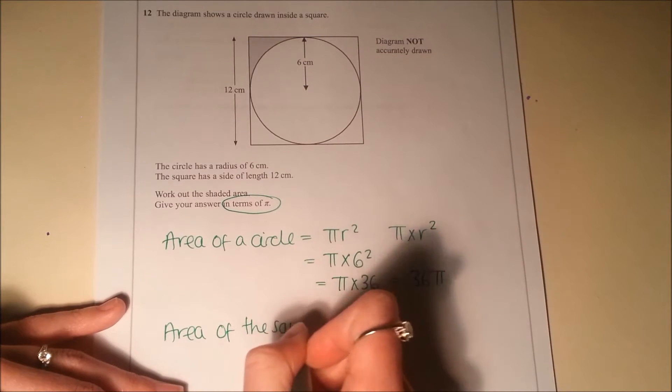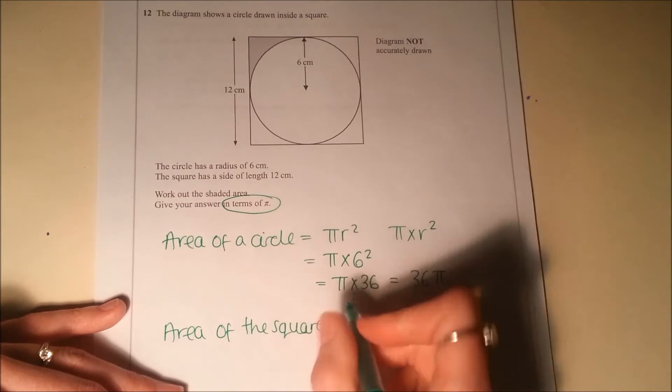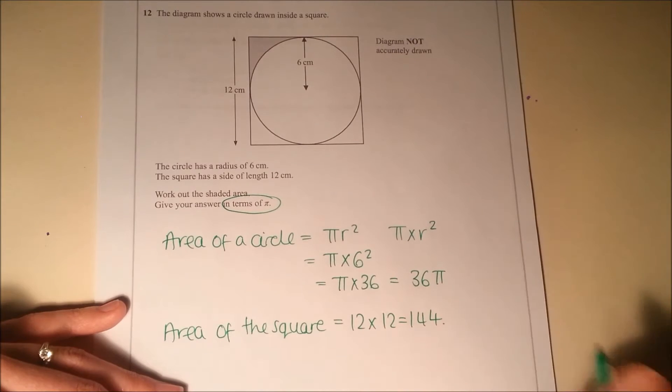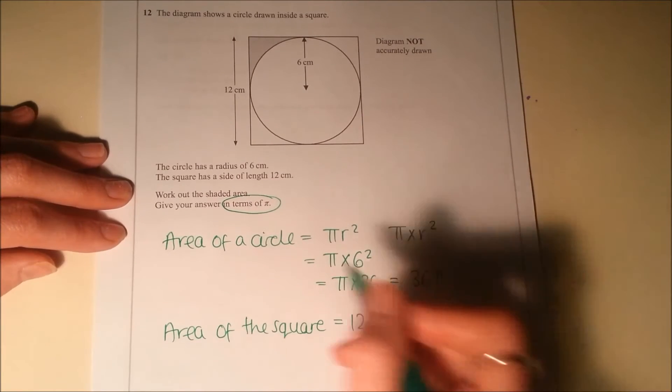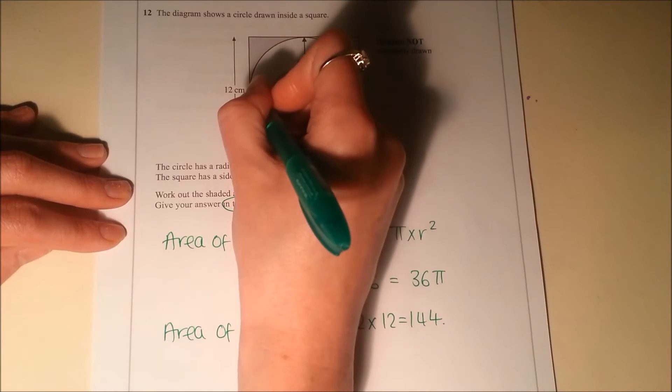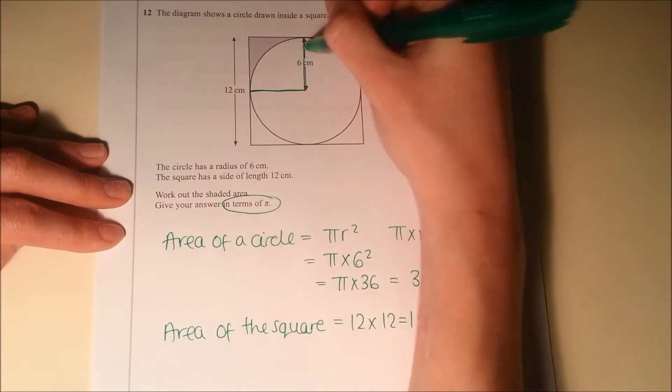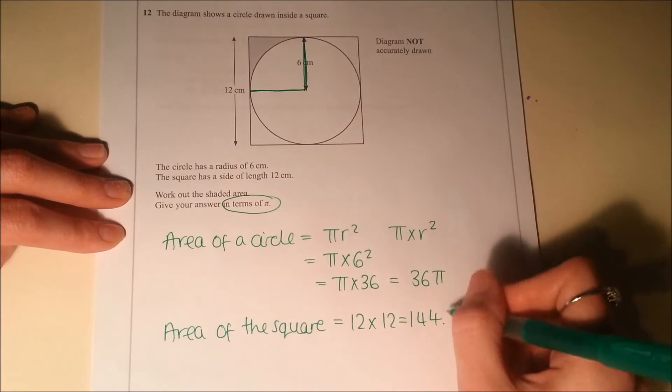We can also work out the area of the square because it's 12 by 12, so 144. Now, if we have a look at this problem again, we've got just a quarter of this, so it's not the full shaded area, it's a quarter of that.